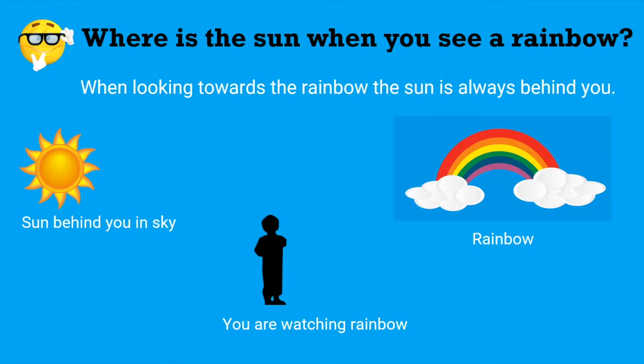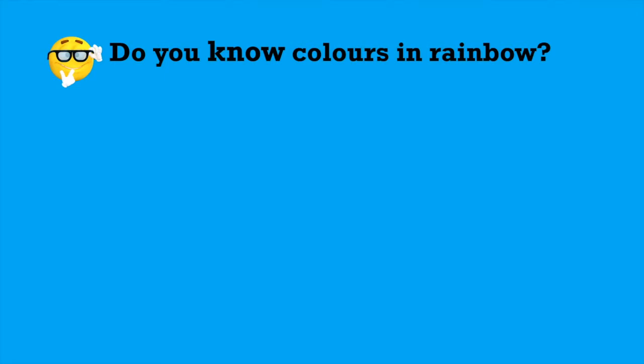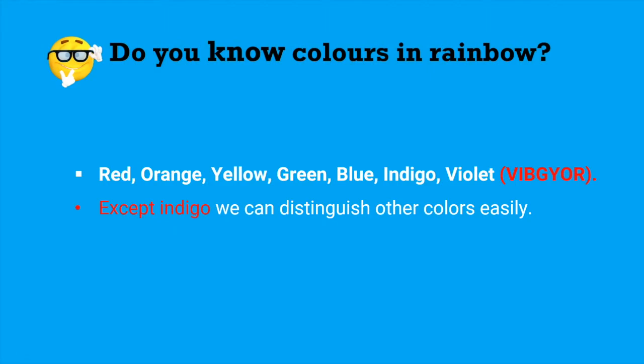Do you know which colors are there in the rainbow? In rainbow we can see red, orange, yellow, green, blue, indigo and violet. These colors are called as VIBGYOR. Except indigo, we can distinguish other colors very easily.